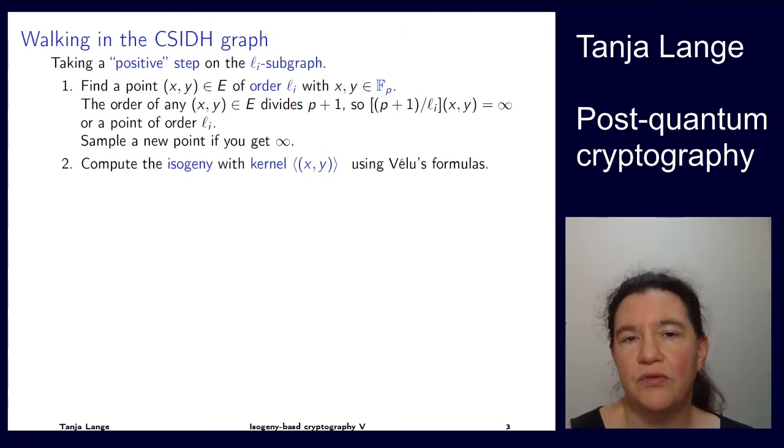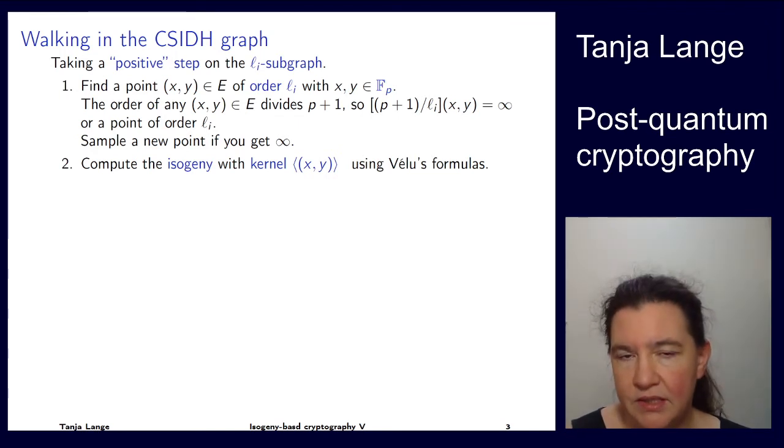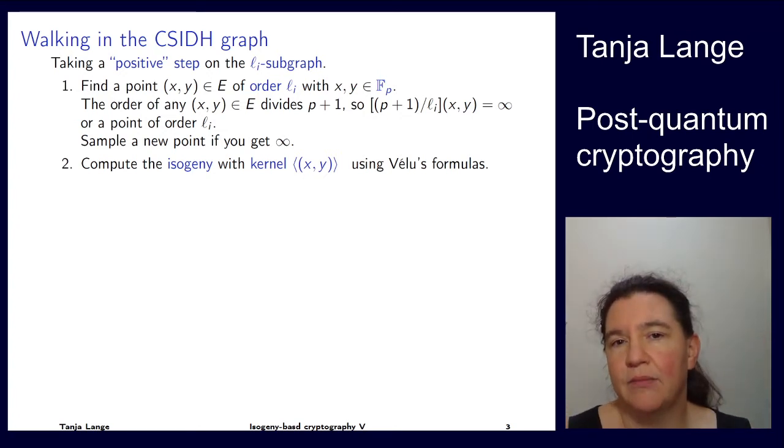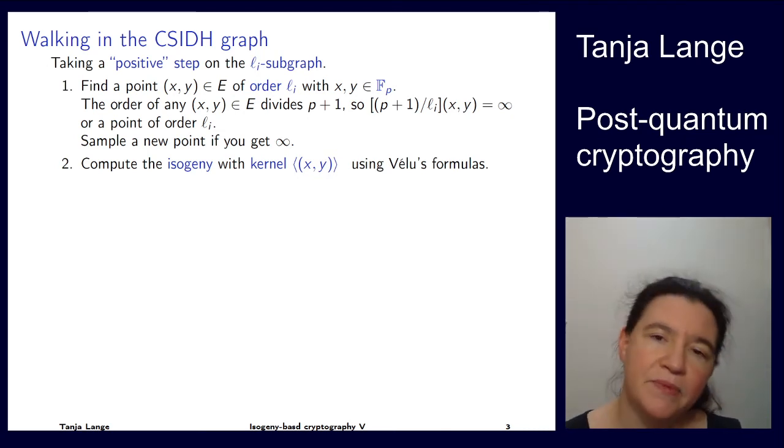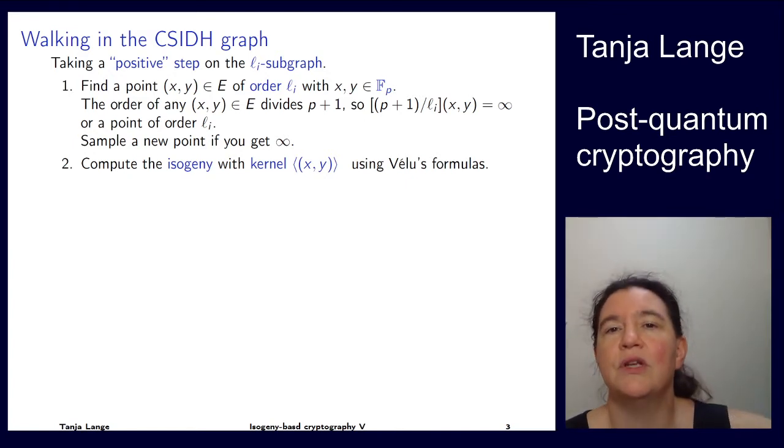To compute a positive step in the lᵢ isogeny graph, we need to find a point of order lᵢ. We know it exists because of the group order, so we just randomly pick any point. Computing p plus one over lᵢ will either get infinity or we know that the point we're getting has order lᵢ, since the only part that's still missing is this lᵢ.